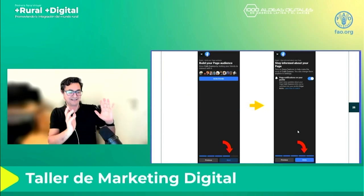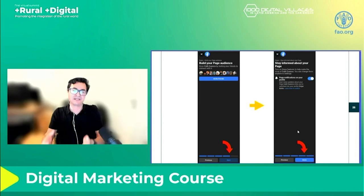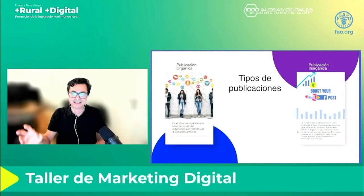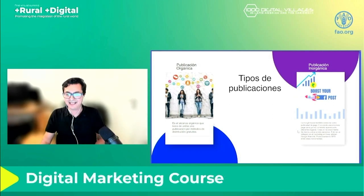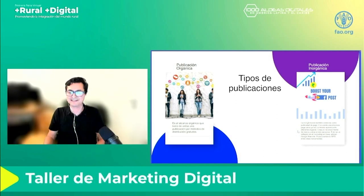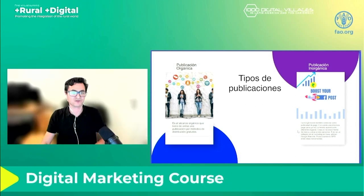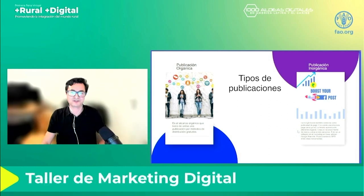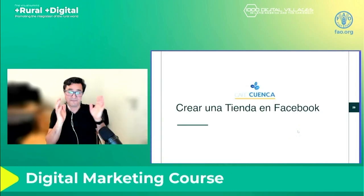In publications there are two types: organic ones, which have free distribution through how people recommend and share your content, and inorganic ones that have a cost — when a company wants to reach more people, you can pay for a campaign so it reaches 40,000, 50,000, or 60,000 people and see how you can translate that to clients on your Facebook page.